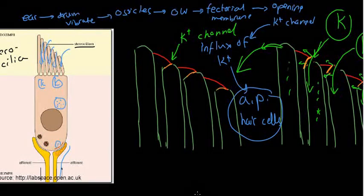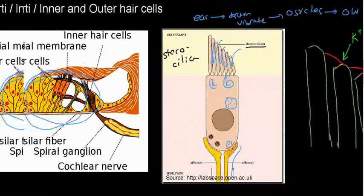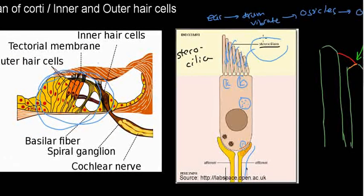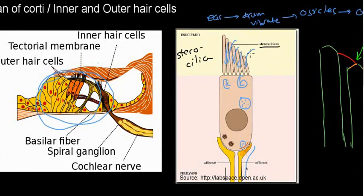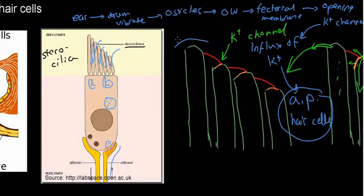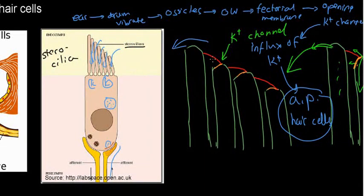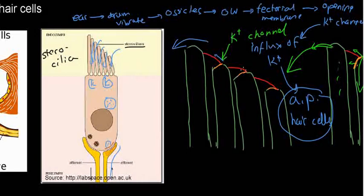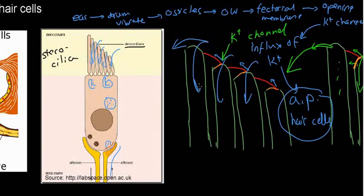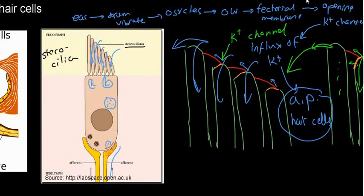All you really need to know is that hair cells have stereocilia on them — these hairs are connected by bridges to potassium channels between one another. When the tectorial membrane moves, the stereocilia move and open little potassium channels that cause the influx of potassium. We'll see you in the next video.